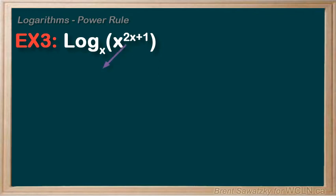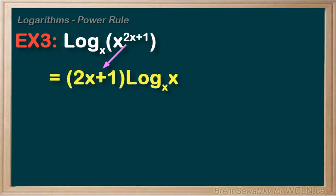So let's bring down that exponent to the front as a multiplication. And we have 2x plus 1 times log base x of x. And that looks a little cleaner.